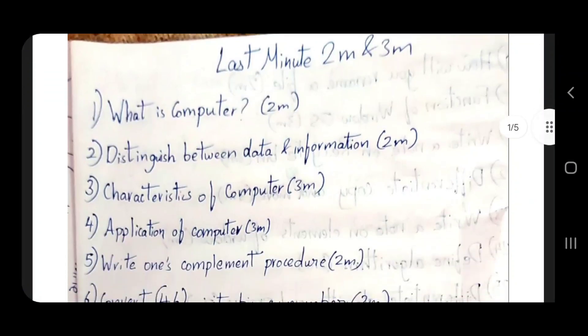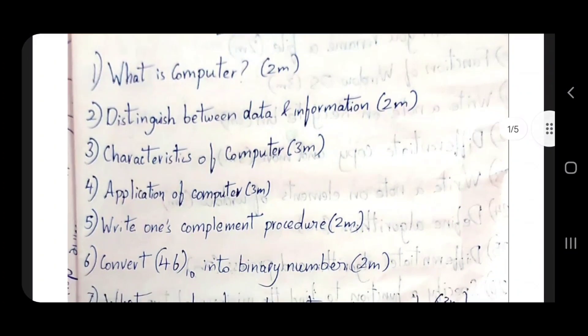Data portions that have been told: What is computer? 2 mark, 3 mark highlighted. Distinguish between data and information. These are the first unit questions, 2 mark and 3 mark.